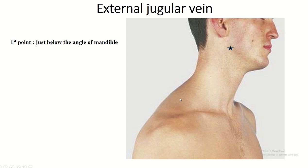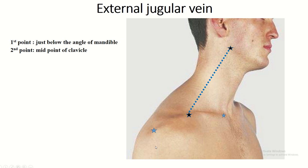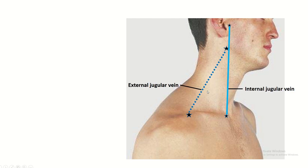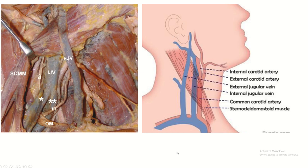Surface anatomy of the external jugular vein: the first point is just below the angle of the mandible, and the second point is at the midpoint of the clavicle. This is the sternal head, this is the acromial head, and this is the midpoint of the clavicle. Join this line — this is the external jugular vein, and this is the internal jugular vein, with the sternocleidomastoid muscle shown.